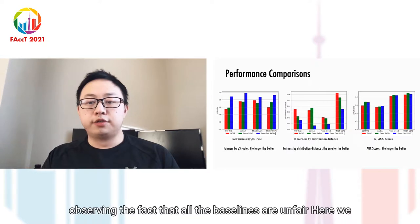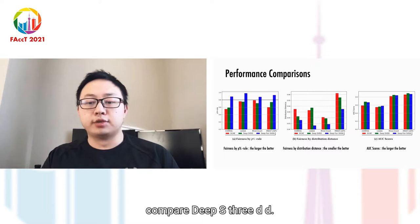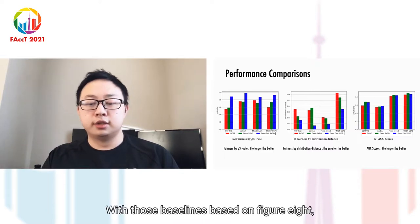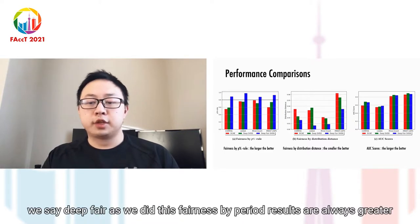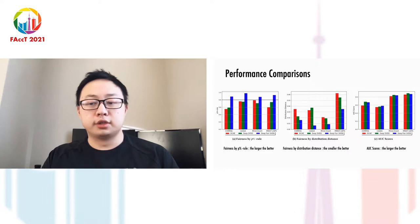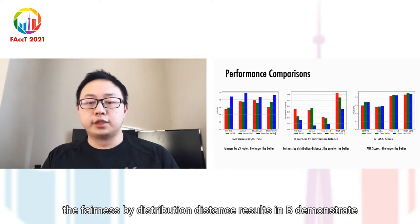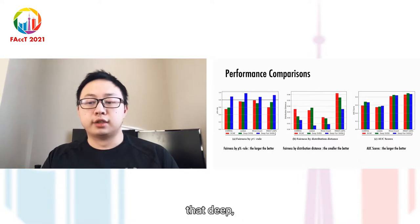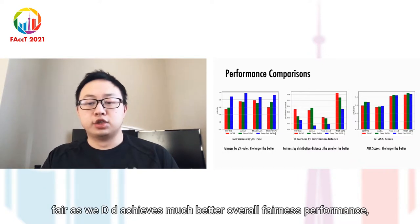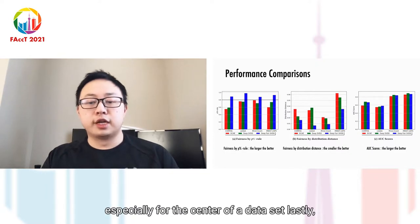Observing the fact that all the baselines are unfair, here we compare DeepFair SVDD with those baselines. In figure A, we see DeepFair SVDD's fairness by P rule results are always greater than 80%. Moreover, the fairness by distribution distance results in B demonstrate that DeepFair SVDD achieves much better overall fairness performance, especially for the CELEB-A dataset.